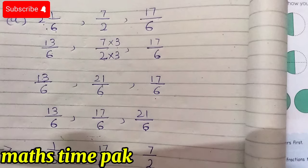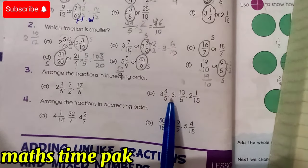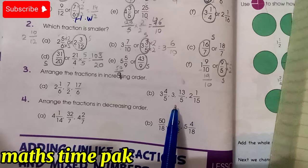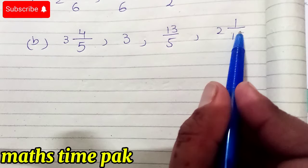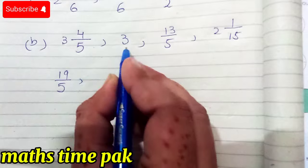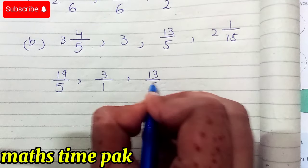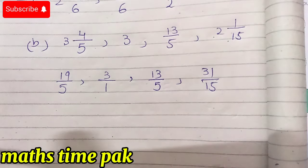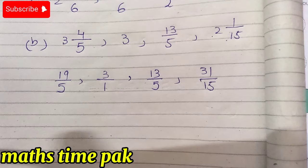Question 3, Part B has four numbers. We have a whole number, a mixed number, a fraction, and another mixed number. We convert the mixed numbers to fraction form. The first mixed number: 5×3=15, plus 4 = 19/5. The whole number 3 has 1 below it, so it is 3/1. The second mixed number: 15×2=30, plus 1 = 31/15.